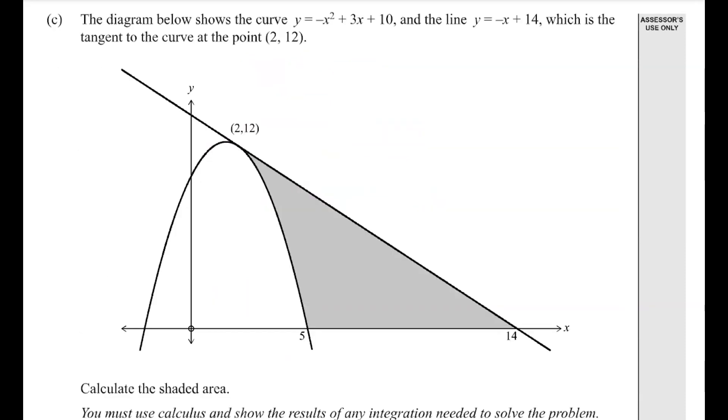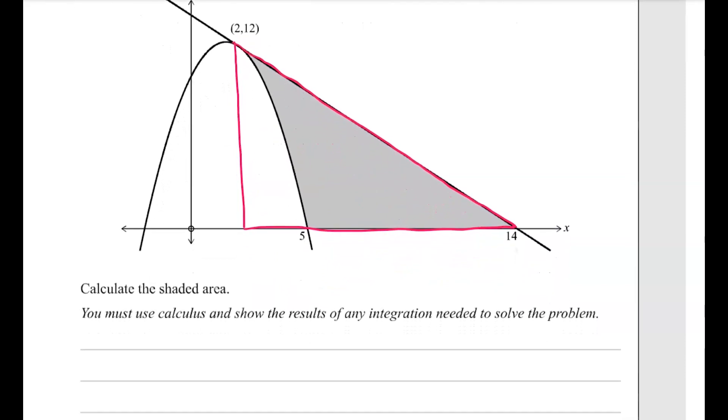Part c, we're finding this shaded area. There's a couple of ways you can do this. I'm going to do it by first of all finding the area of this triangle here, and then taking away the area under the curve that would be this bit here.